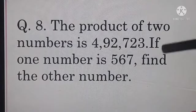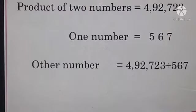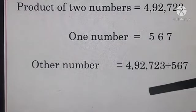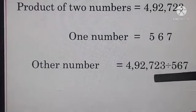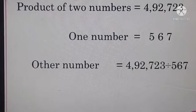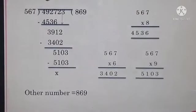Means when product is given and 1 number is given, to find the other number we will divide. Product of 2 numbers 492,723, 1 number 567. Other number equals 492,723 divide by 567. Clear? Now we will do division. This is dividend and this is our divisor.